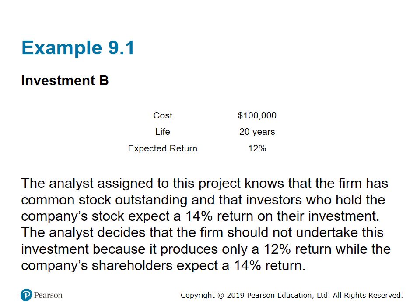Investment B also costs one hundred thousand dollars, has a lifetime of 20 years, and an expected return of 12%. The second analyst knows the firm has common stock outstanding and that investors expect a 14% return. The analyst decides the firm should not undertake Investment B because it produces only 12% return while shareholders expect 14%. He compared the cost — 14% required by shareholders — against the 12% return of the investment, and rejected it because cost is greater than the return.